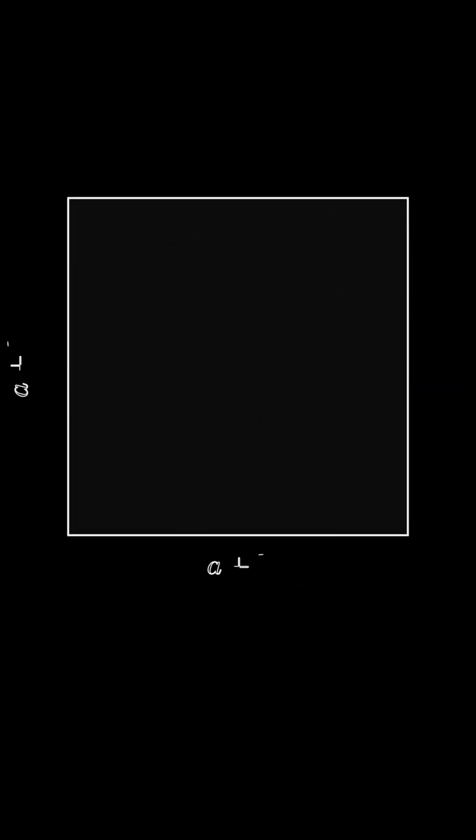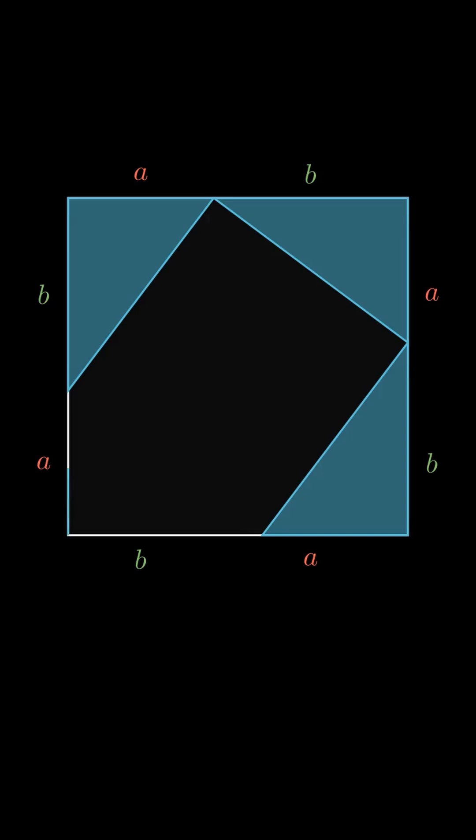Now, we can prove this by first making a square with sides a plus b. Each side splits into segments a and b. Put four copies of our triangle in the corners, since they have sides a and b.